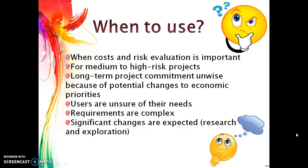Now let's see when to use the spiral model. It can be used when cost and risk evaluation is more important, and for medium to high risk projects. Long-term project commitment is unwise because of potential changes to economic priorities — meaning as the iterations go on, the cost of the project also increases. It can be used when users are unsure of their needs, or when any additional requirements need to be added in later stages. This model can also be used when requirements are complex and significant changes are expected, which is mainly seen in research and exploration.